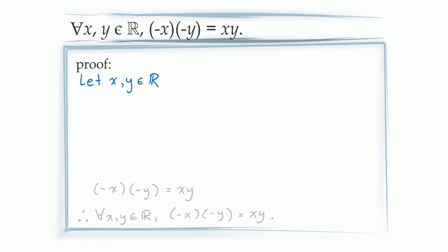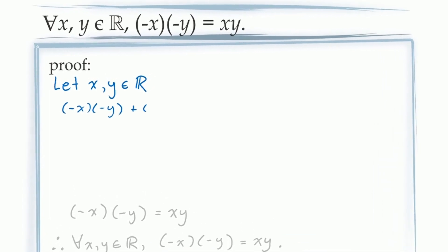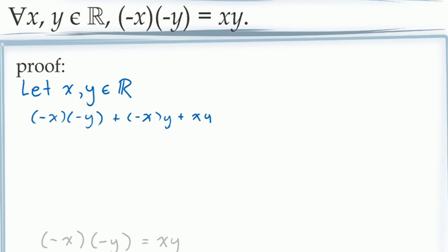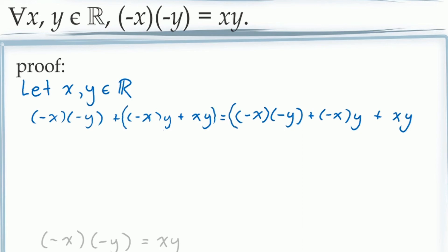Let's return to our proof. We can begin with the three-term expression: negative x times negative y, plus negative x times y, plus xy, equals itself. We can group these three terms in two different ways — grouping the second two terms on the left-hand side, and grouping the first two terms on the right-hand side. The fact that this equation is true is simply an application of Axiom A2 — the fact that addition is associative, so three terms can be grouped in any way we want. Our job now is to show that the expressions in brackets on both sides evaluate to 0.